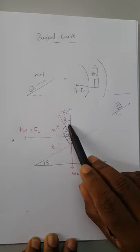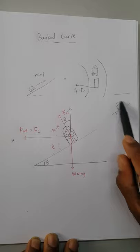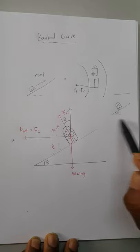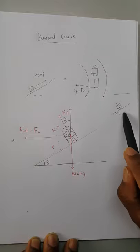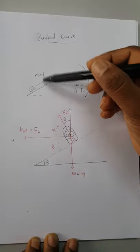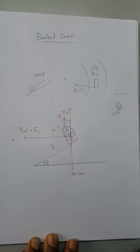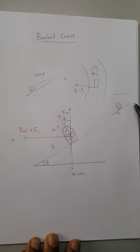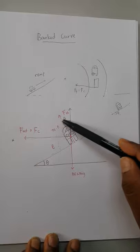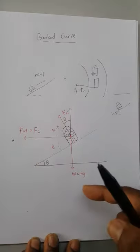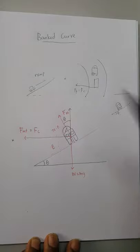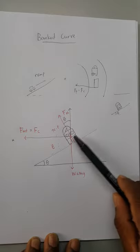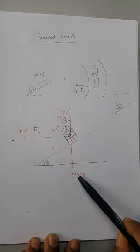For a banked curve, the way we resolve vectors is different from a ramp. On a ramp we resolve the weight to get mg cosθ and mg sinθ. But for a banked curve, the car no longer relies on friction — it relies on the normal force to make a sharp curve at high speed. That is the purpose of banking the road. So for a banked curve, we resolve the normal force, not the weight.